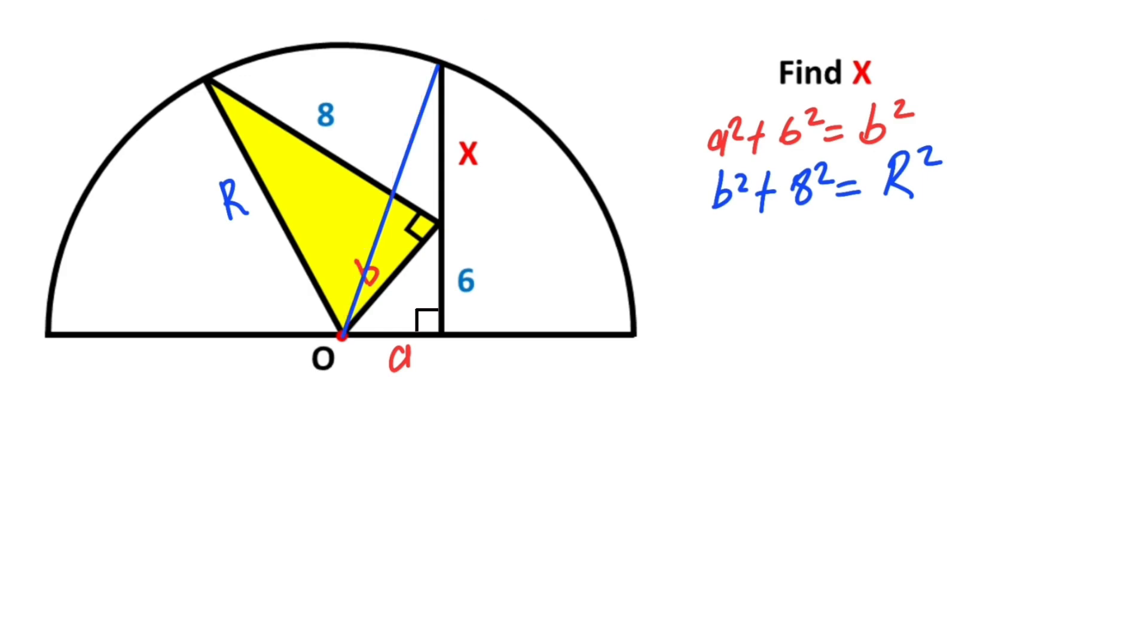Notice that this length is also the radius, so for this triangle we can also apply the Pythagorean theorem. Therefore, a² + (x + 6)² = r².